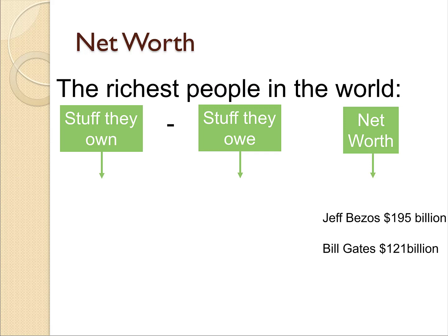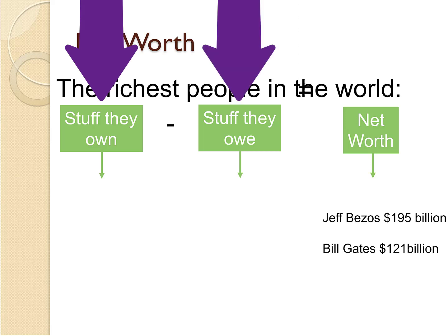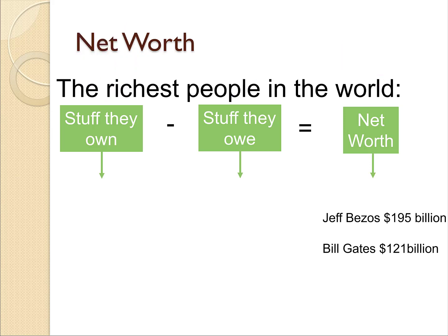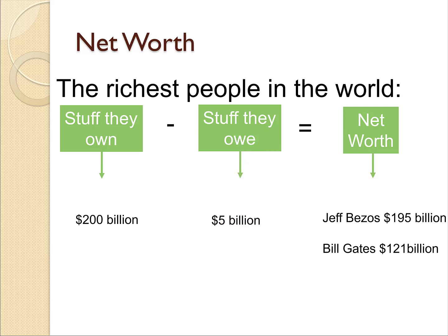Later we'll find out what the accounting vocabulary is for stuff they own and stuff they owe. If you take the stuff they own and subtract the stuff they owe, that equals net worth. For example, maybe Jeff Bezos owns 200 billion dollars of stuff and maybe he owes 5 billion dollars to the bank. We do the math and 200 billion minus 5 billion equals a net worth of 195 billion.